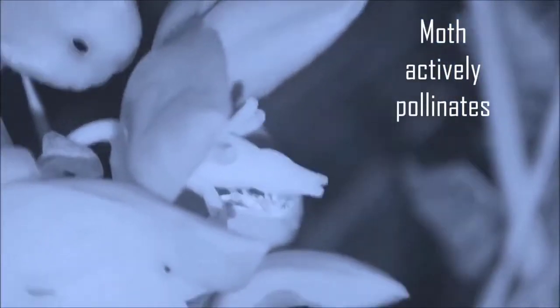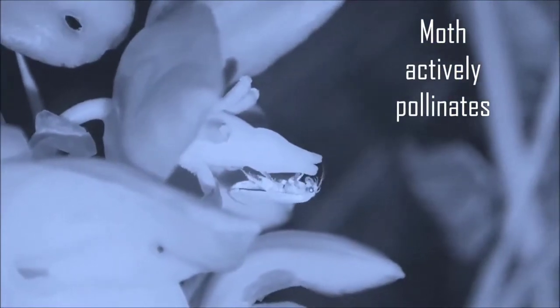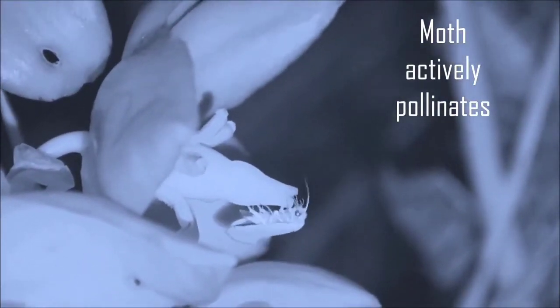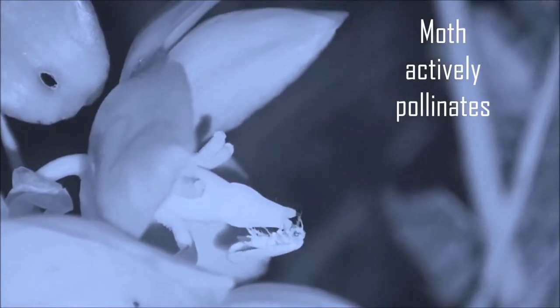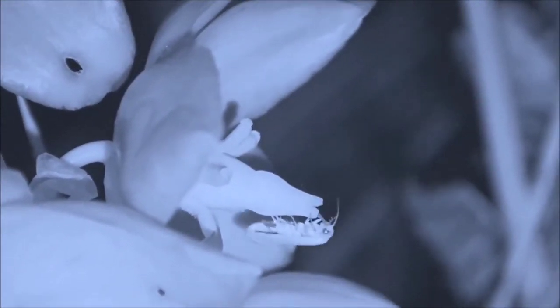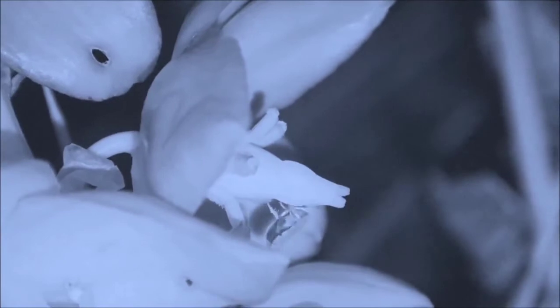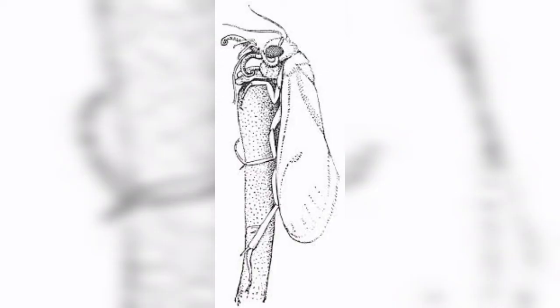The larva of the moth feeds on the seeds of the flower. They consume only part of the seeds, leaving enough for the plant to propagate. Once it matures, the larvae fall to the ground and pupation takes place. The adult moth emerges later and the cycle is repeated.